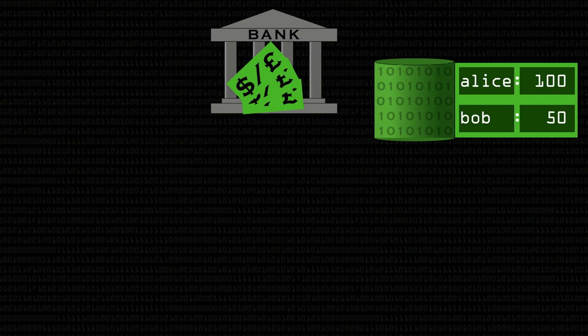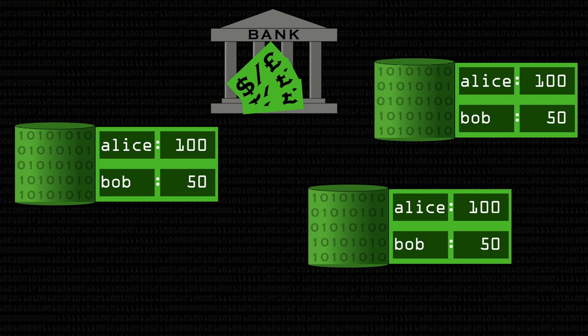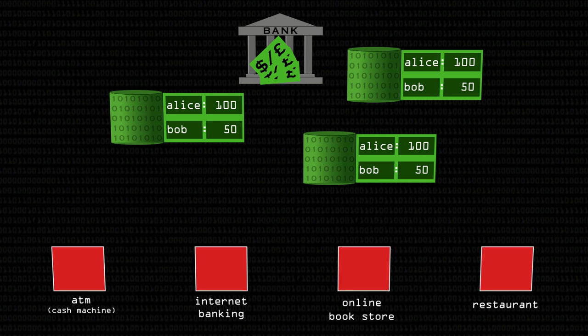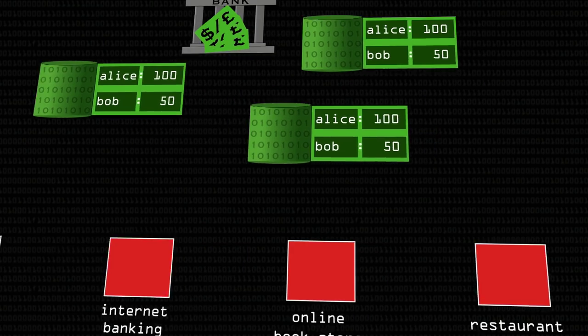And the same is true for computer systems. If you've got a bank, Alice has £100 and Bob has £50 — you have this database replicated across three different machines. Then you have some clients: these might be an ATM, might be a website for online banking, you might have an online bookstore, and then a shop in a restaurant. And these clients will put in requests and say things like, how much money does Alice have? So these machines could respond and say Alice has £100.